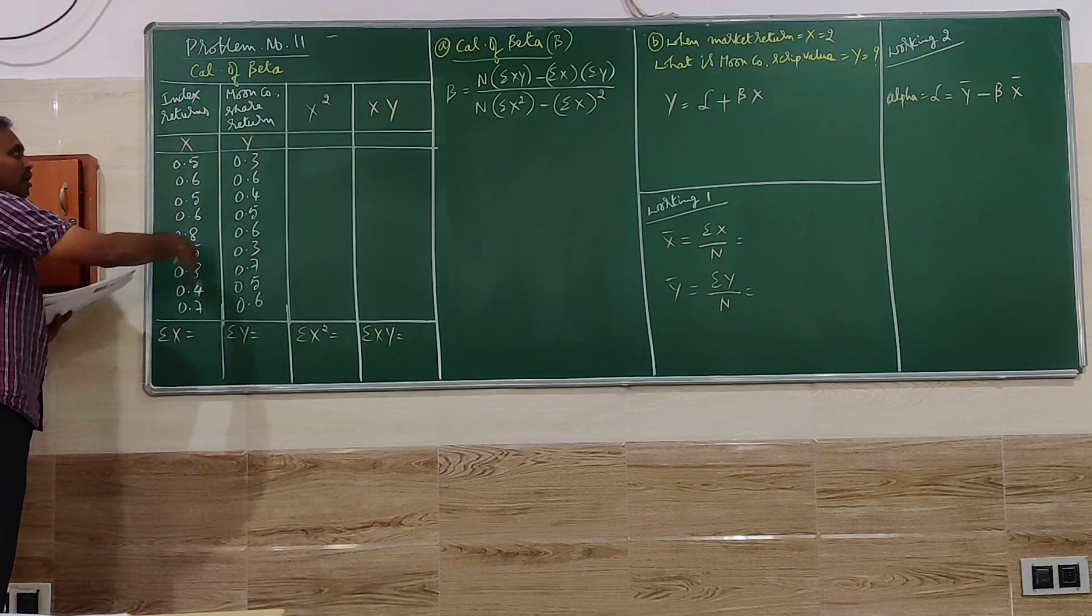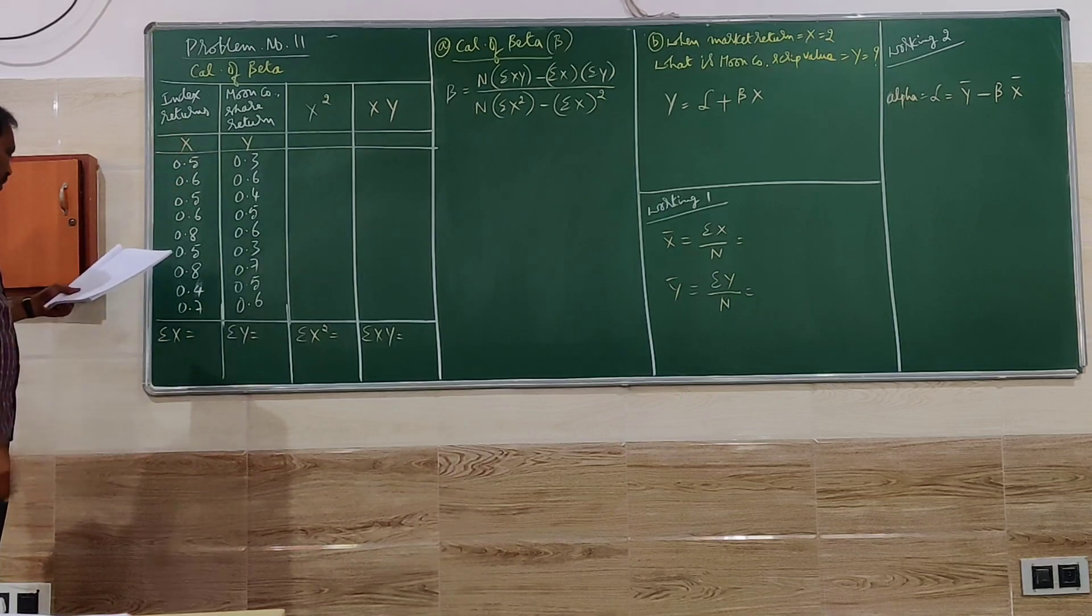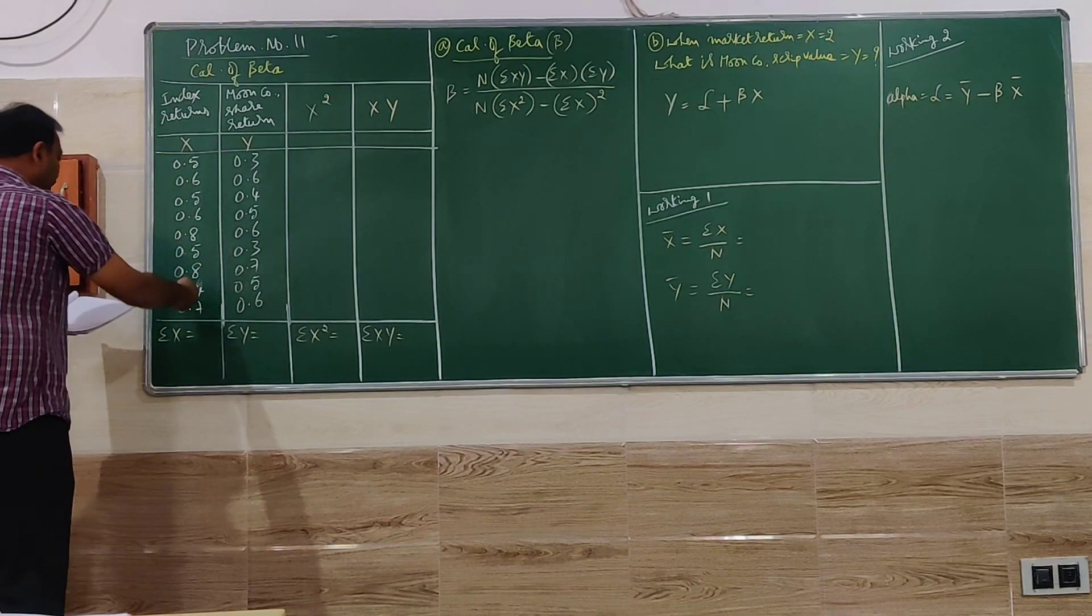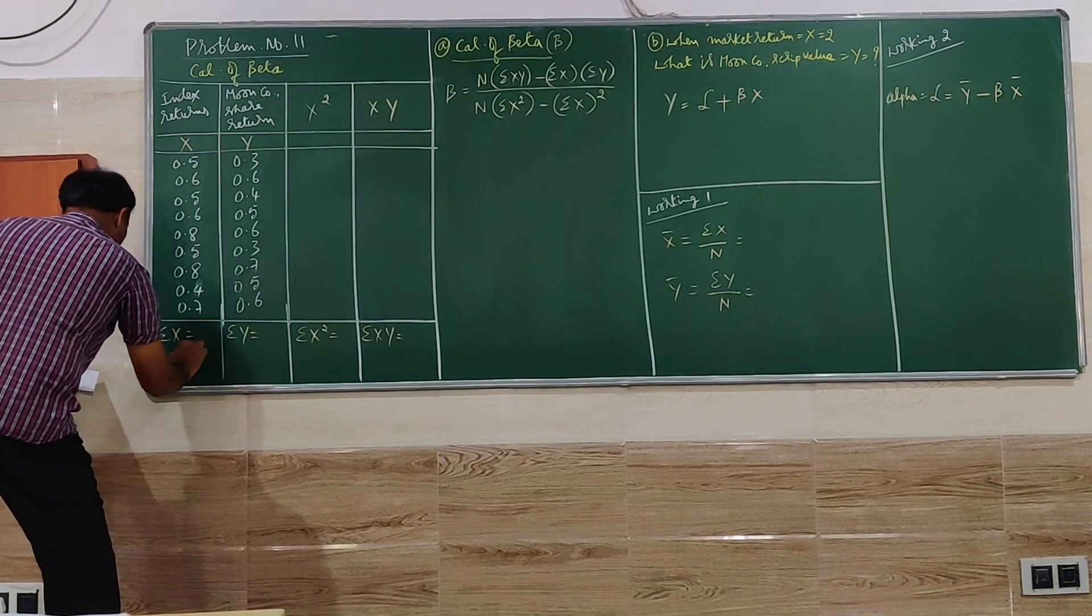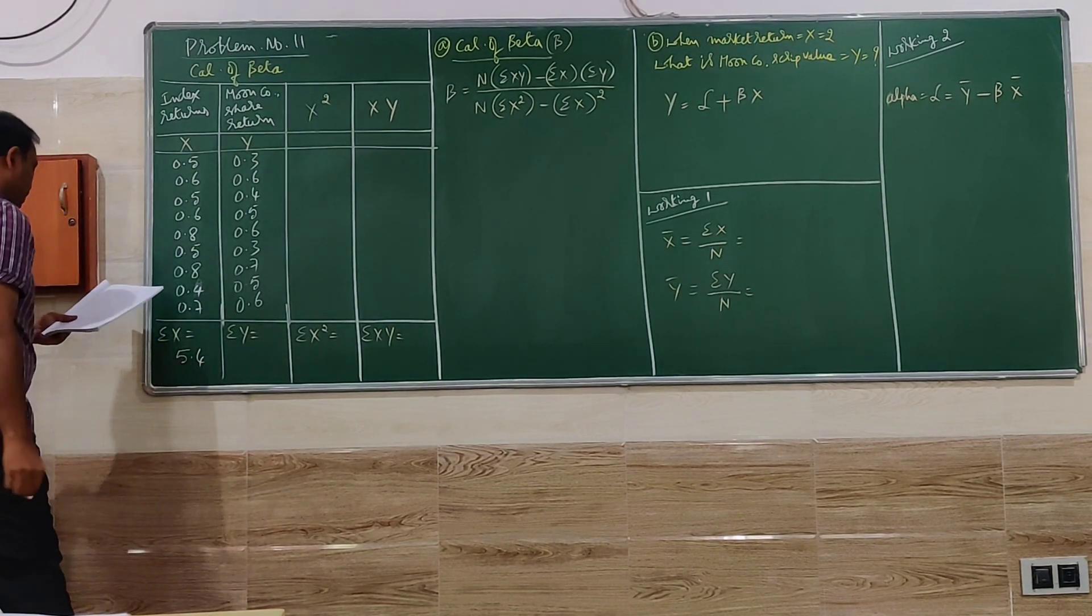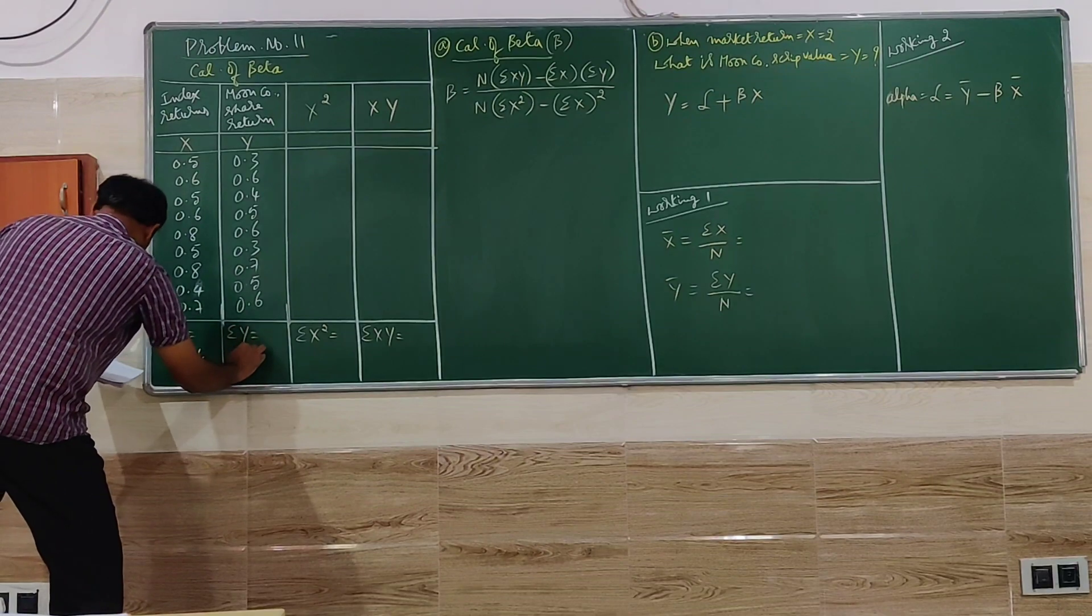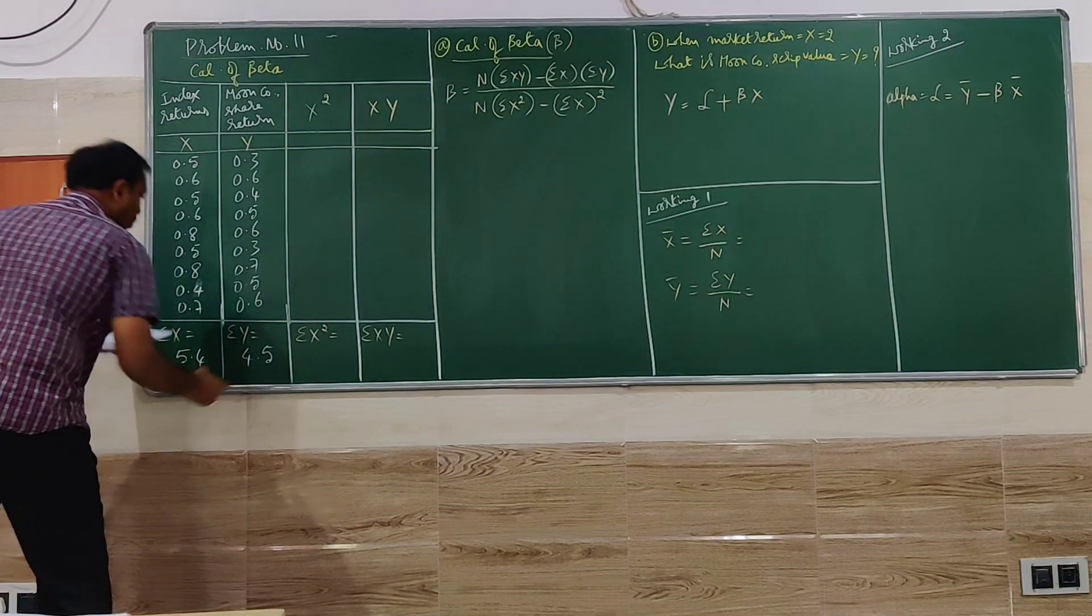First we have to go for totaling of X and Y, then we can go for the remaining. The total of X column if you calculate is 5.4. Total of Y column is 4.5.